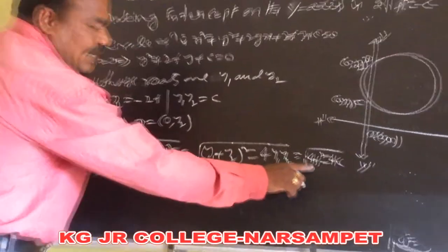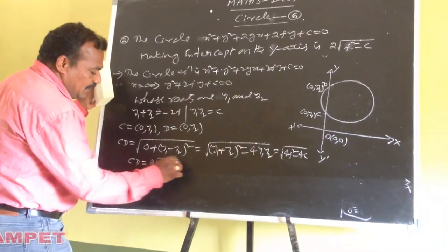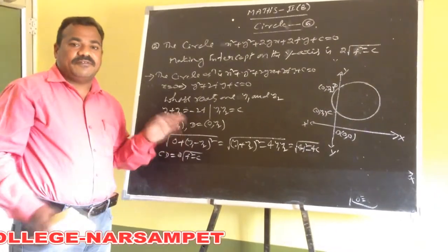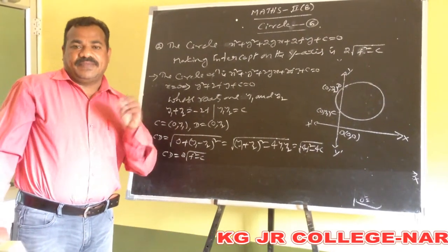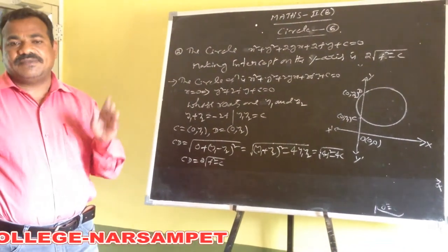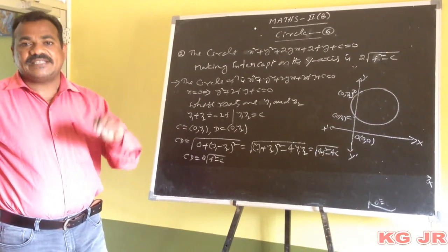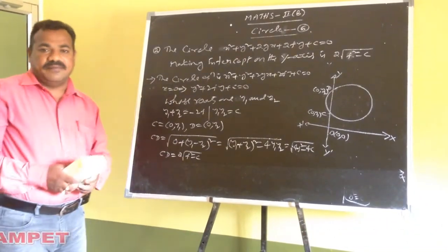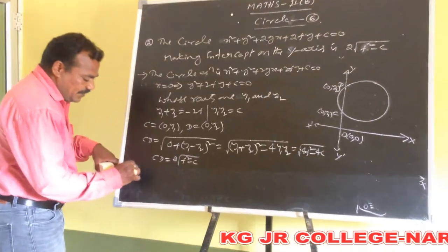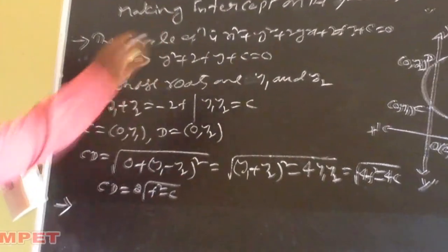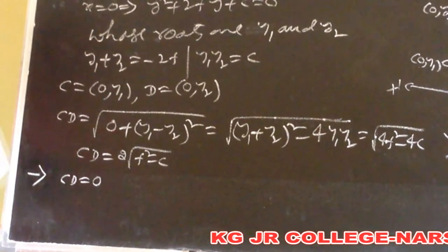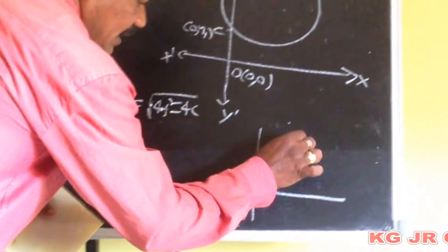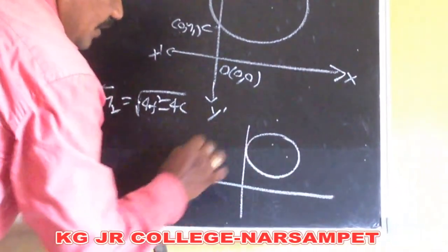So this is the formula: for the circle x square plus y square plus 2gx plus 2fy plus c equal to 0, making intercept on the y-axis is CD equals 2 into root of f square minus c. Now another condition: if the intercept CD equals 0, whenever the intercept on the y-axis equals 0, the circle touches the y-axis.